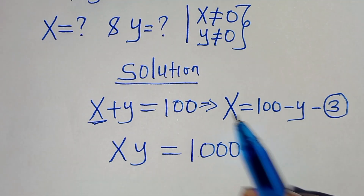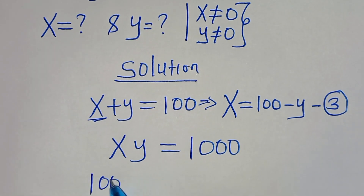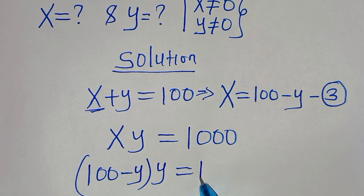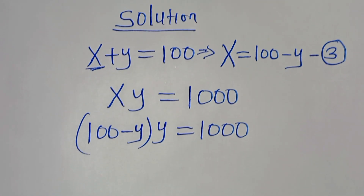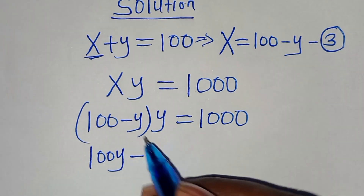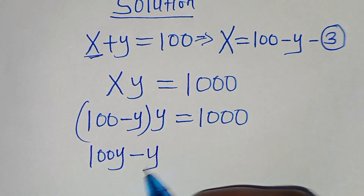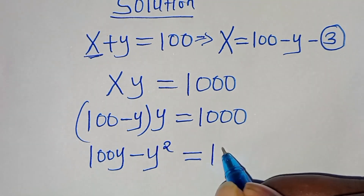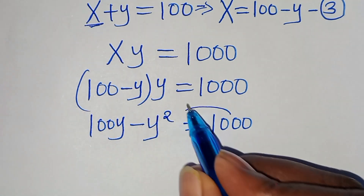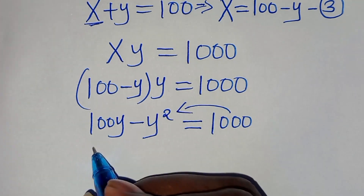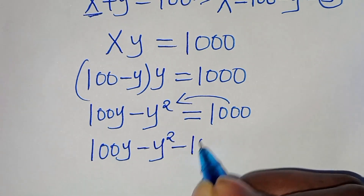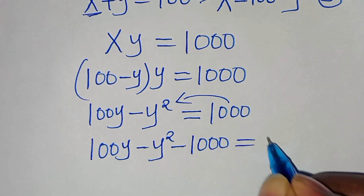So let's substitute the value of x, which is (100 minus y) times y, and this is equal to 1000. Now we have 100 times y, which is 100y, minus y times y, which is y squared, and this is equal to 1000. The next step is to take 1000 to the left hand side, so that now we have 100y minus y squared minus 1000 equals 0.